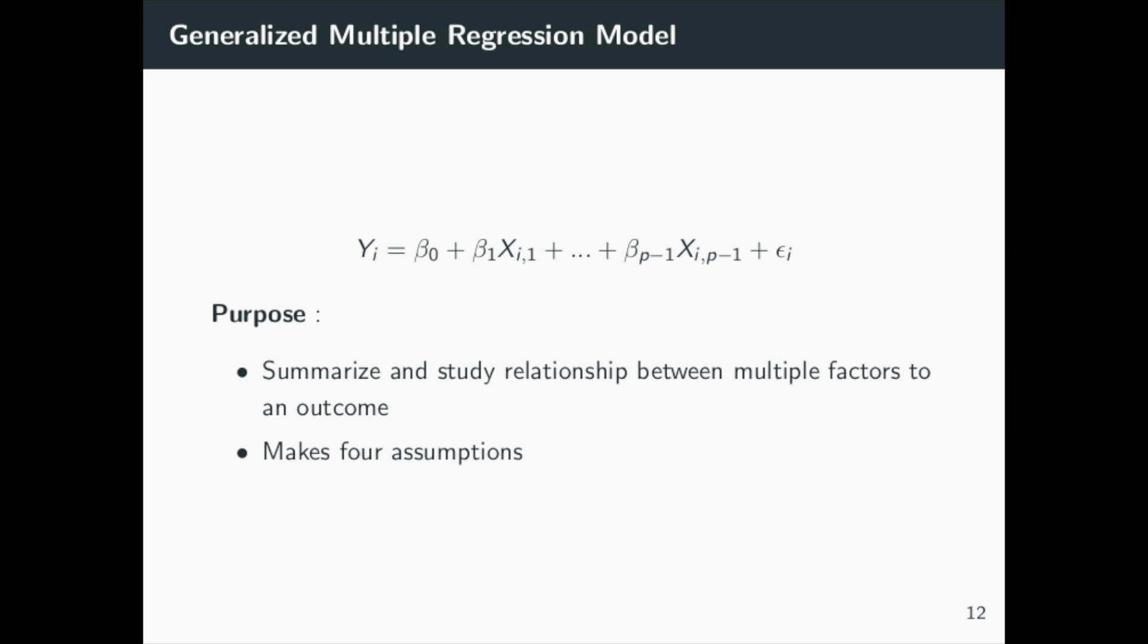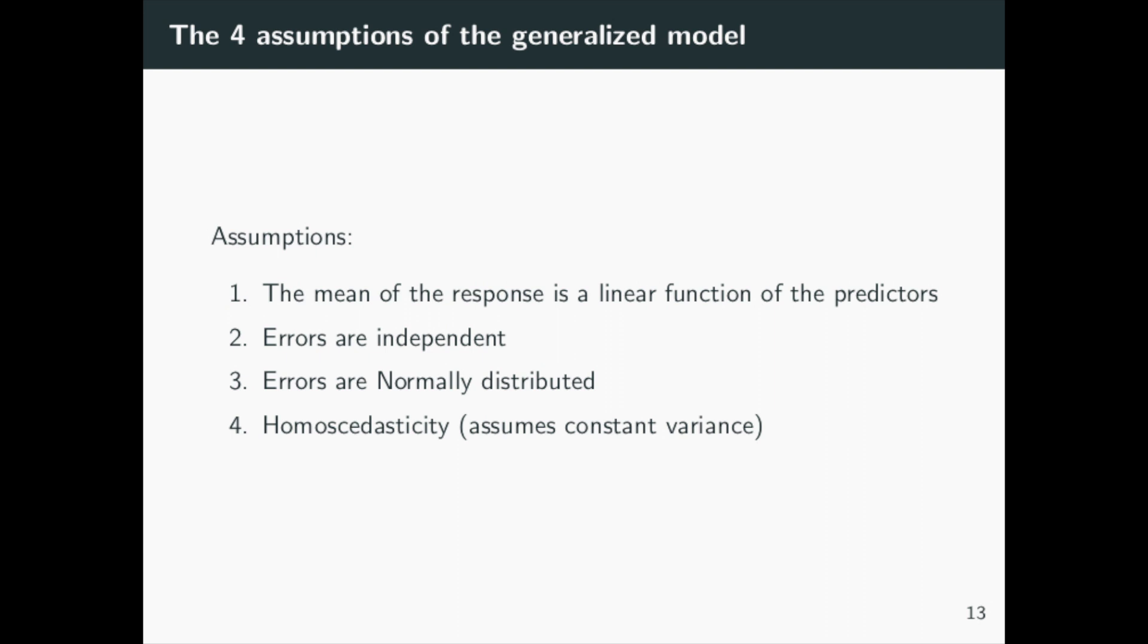There are four assumptions made about this model. In the generalized model, we make the assumption that the mean of the response variable is a linear function of the predictors. The errors are independent and are normally distributed. The variance is also assumed to be constant.